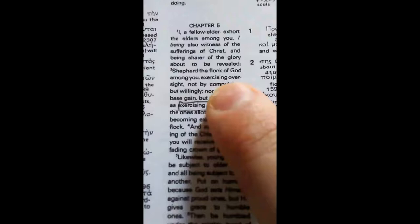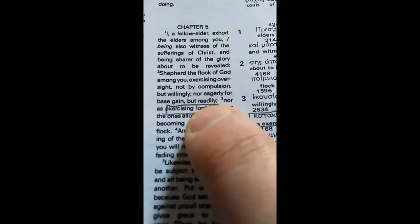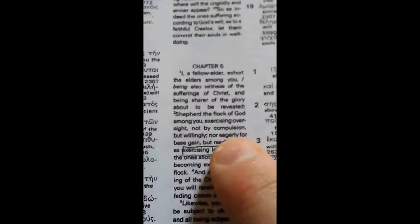So, we're going to look at that reference in Peter over here, right here in this interlinear Bible. So, it says right here that, Shepherd the flock of God among you, exercising oversight, not by compulsion, but willingly, nor eagerly for base gain, but readily, nor as exercising lordship over the ones allotted to you, but becoming examples of the flock. So, a believer is there to set the example, not to dress up in tuxedos and to drive a really nice car at the expense of the people under you. That's why it says, not nor eagerly for base gain, because people making a profit. In fact, there's a distribution should be made.